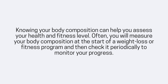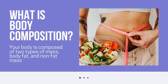Here in our lesson, we are going to talk about how we know our body composition or even our weight. So what should we consider when we check our weight — is it the exact weight that our body has? We are going to talk about body composition, which means your body is composed of two types of mass: body fat and non-fat mass. Now let's differentiate the two.